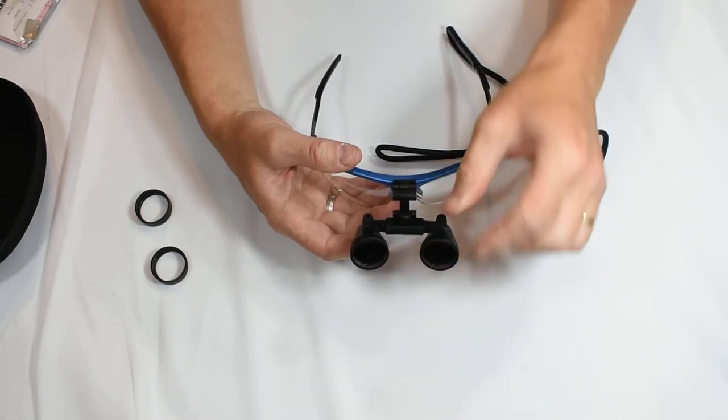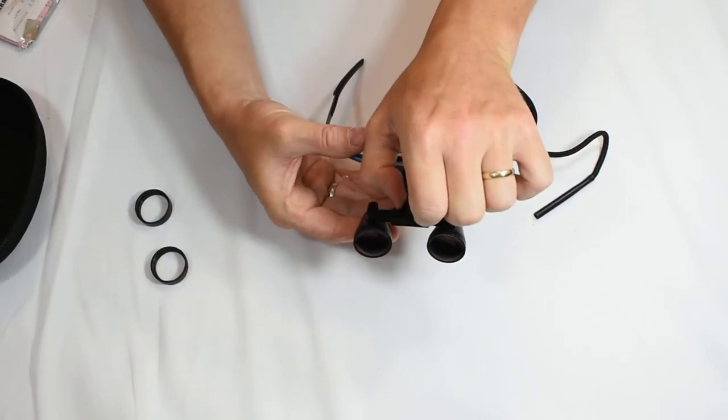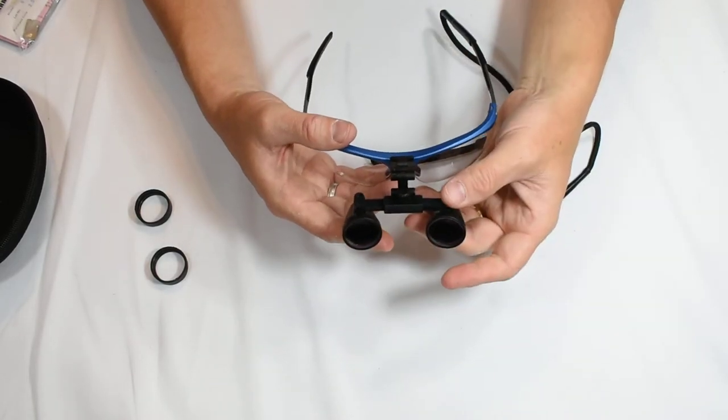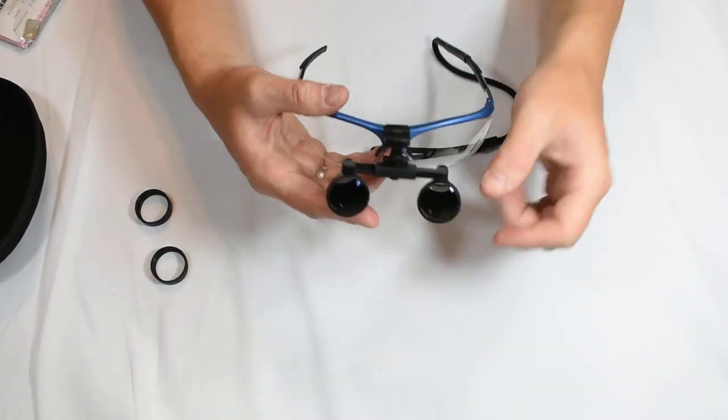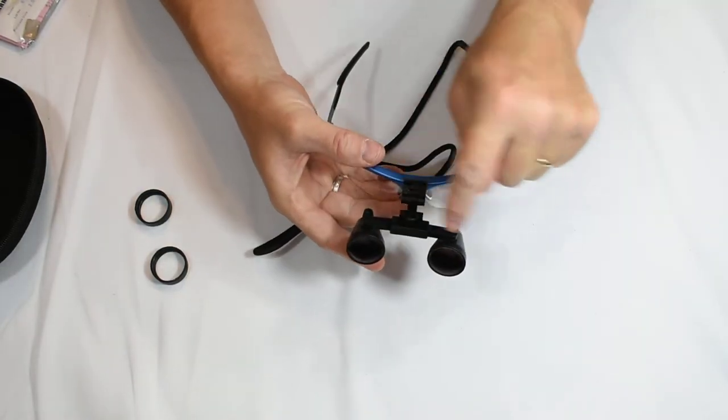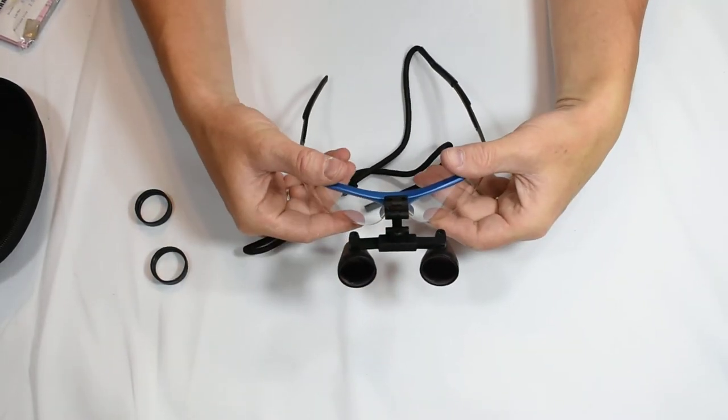So what I need to do is turn this knob left or right to make that adjustment, and then once it's set then I can just tighten the screw underneath and that will hold that into that position.